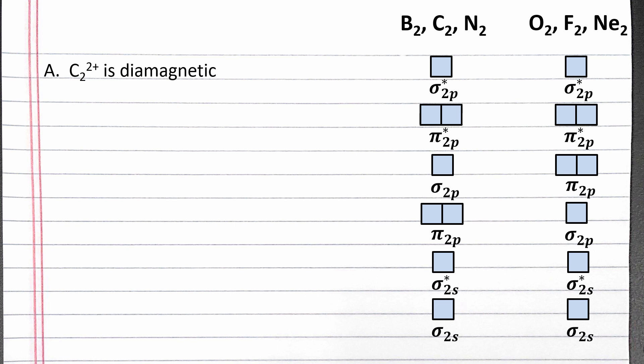After we fill in the diagram, if it shows all electrons are paired, then C₂²⁺ should be diamagnetic. If there are any unpaired electrons, then C₂²⁺ should be paramagnetic. To fill in the molecular orbital diagram, we'll first need to determine how many electrons to add.